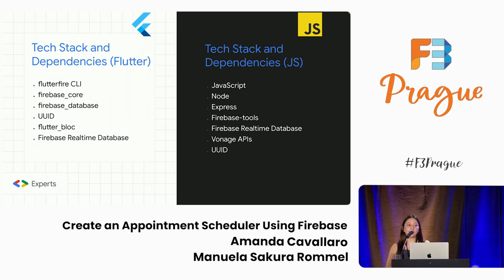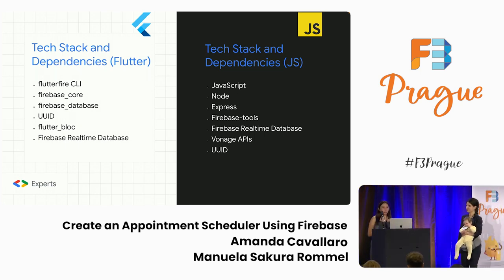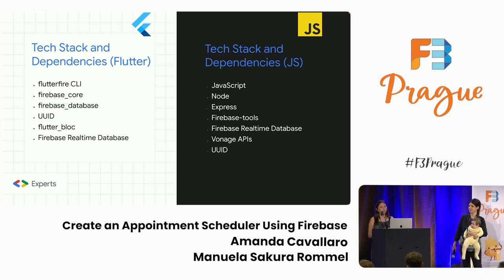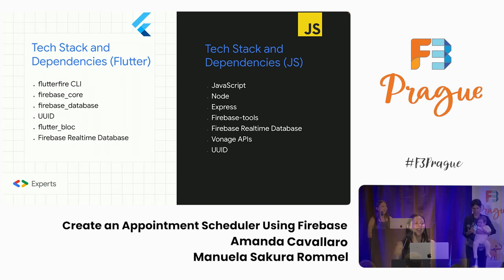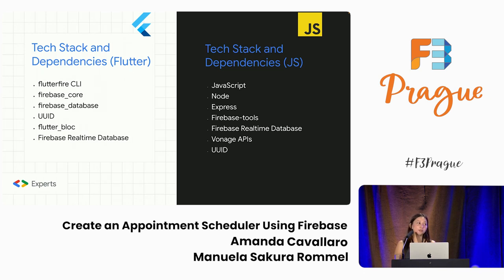To achieve this app, we need specific tools and dependencies. For Flutter, we use FlutterFire CLI, Firebase Core for our Firebase Core API, Firebase Database for our Firebase Real-time Database API, and UUID to create unique identifiers that we assign to our appointments. I use Flutter Bloc as my state management — you can use whatever state management you want to. And of course, Firebase Real-time Database. What do you use for JavaScript?